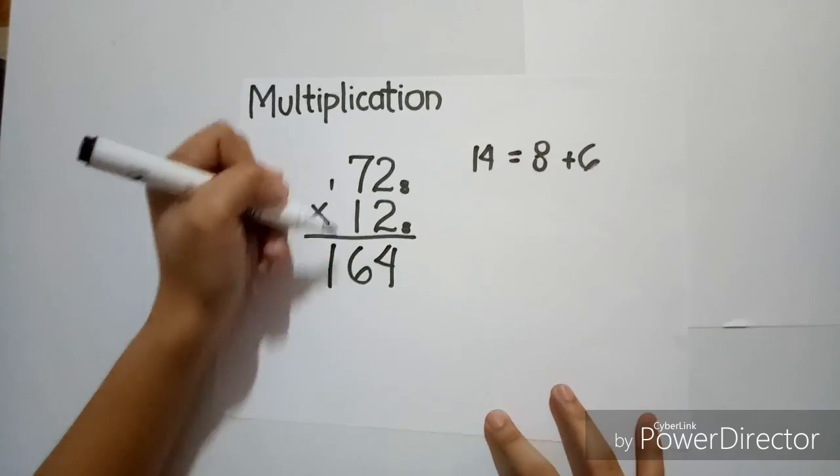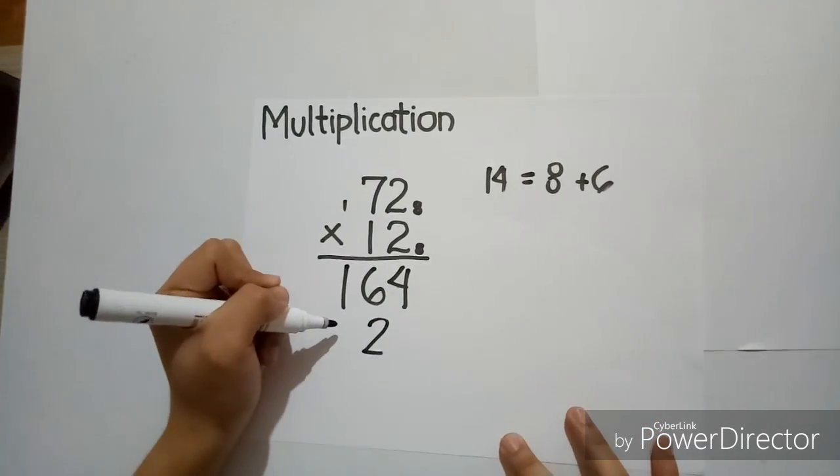Now, 2 times 1 is equal to 2, and 7 times 1 is equal to 7.